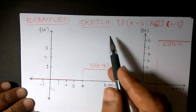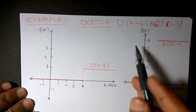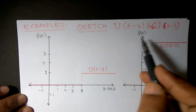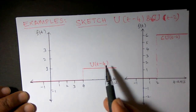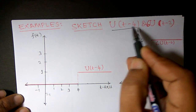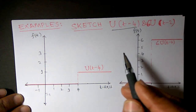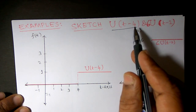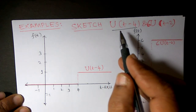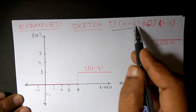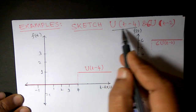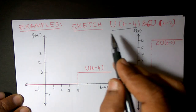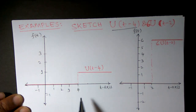Instead of calculating mathematically, sometimes they ask you to sketch u(t - 4) or sketch 6·u(t - 2). For u(t - 4), it behaves like an electric switch: the switch is off when t is strictly less than 4, and the switch is on when t is greater than or equal to 4.